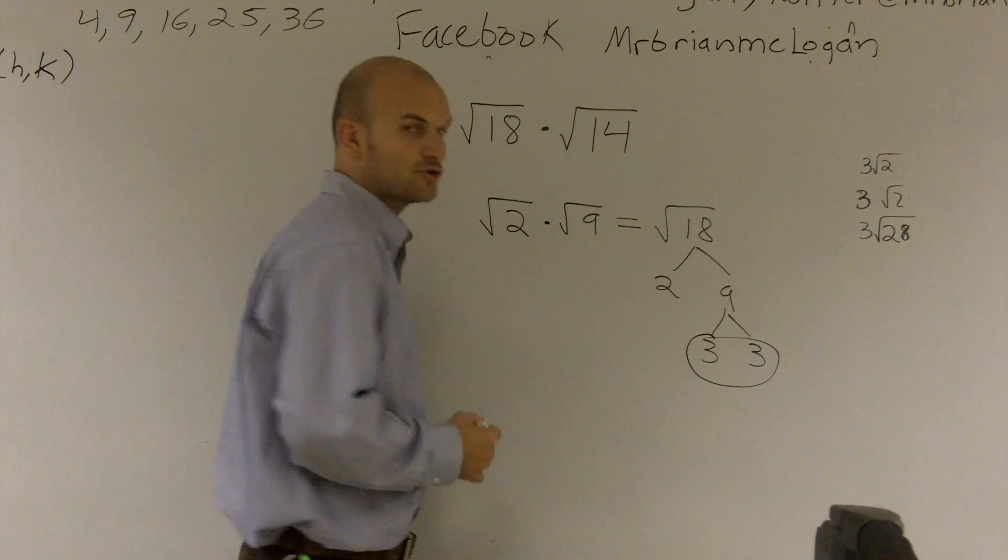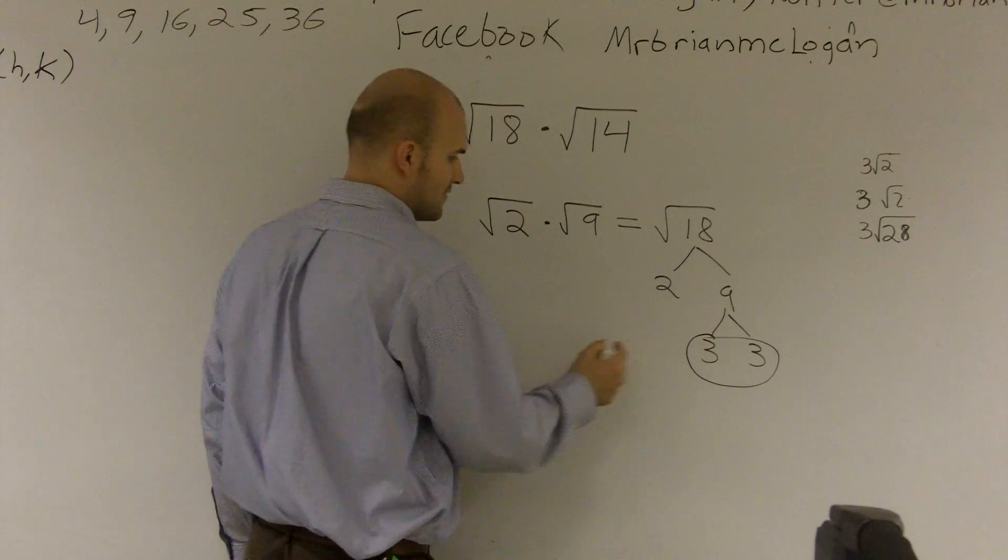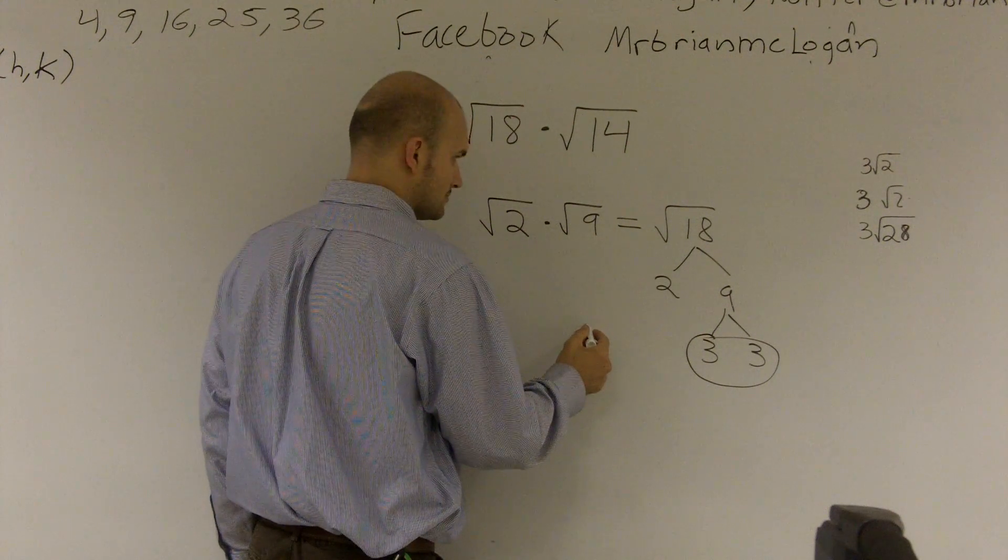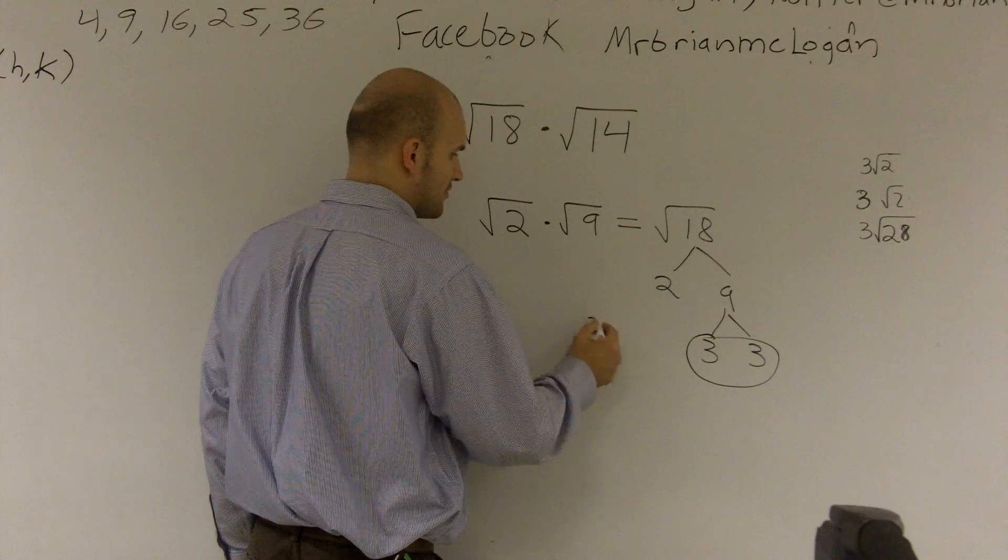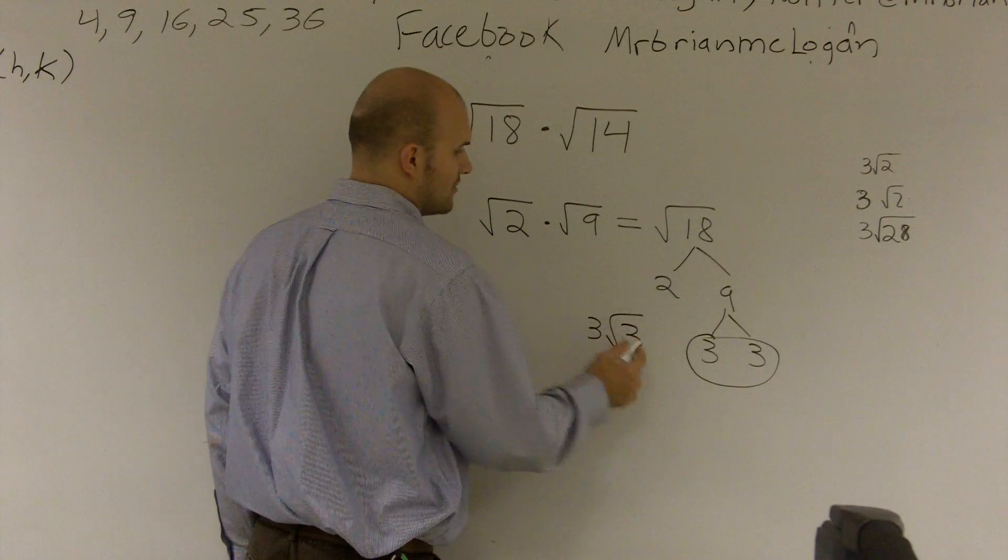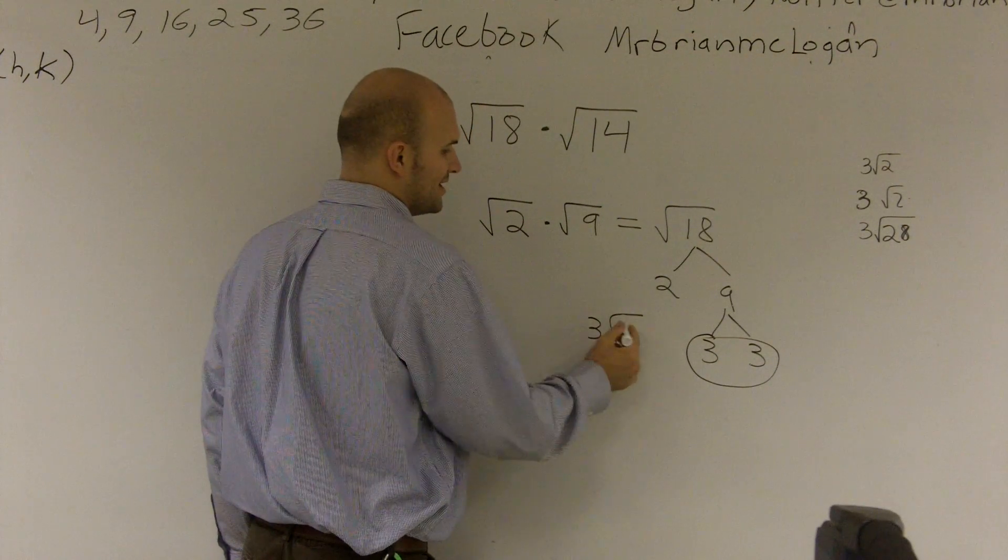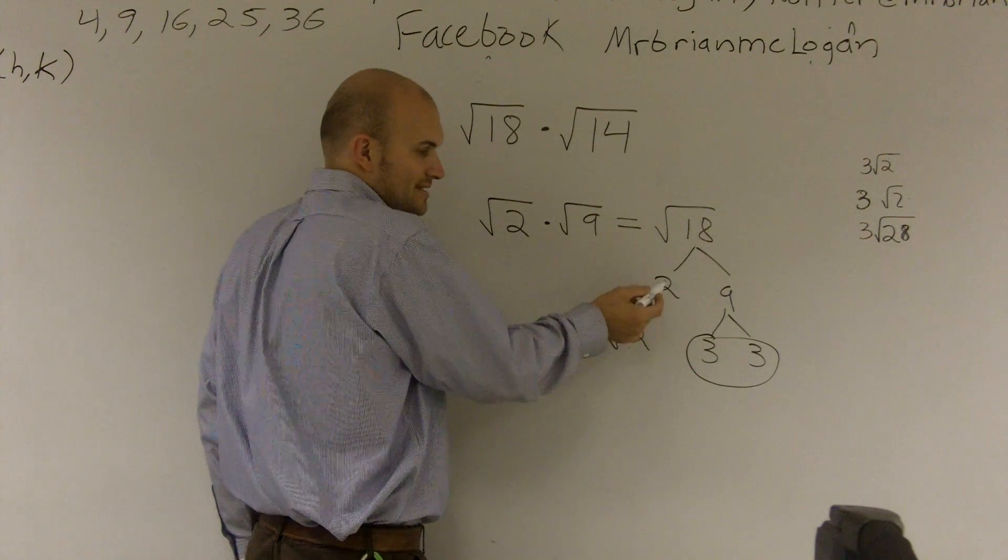Since we're taking the square root, I'm going to group groups of two of them. So therefore, I'll have three and it comes out times the square root of two. Since that's left over, I can't take the root of that out.